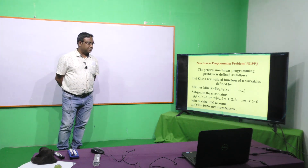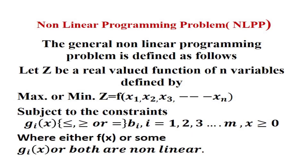Today we discuss the solution of NLPP by the Lagrangian method. The general form of the non-linear programming problem is: maximize or minimize z, which is a function of n variables, subject to constraints g_i(x) ≤ or ≥ b_i, where either f(x) or some g_i, or both, are non-linear. If at least one equation is non-linear, the problem is a non-linear programming problem.